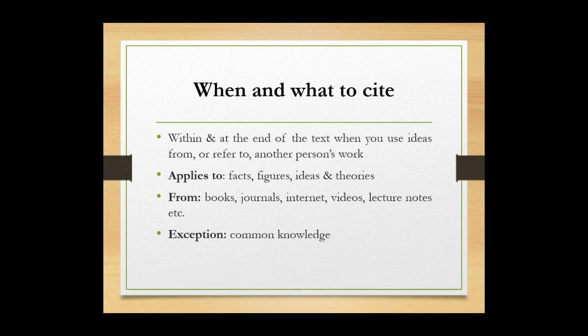The exception is only with common knowledge. For example, the sun rises from east to west — those are common knowledge, so you don't have to cite for common knowledge. Where do you cite? You cite within or at the end of the text when you use those ideas and refer to someone else's work.